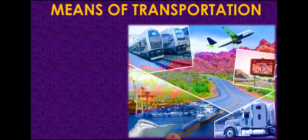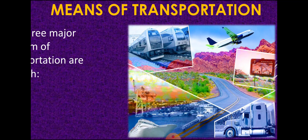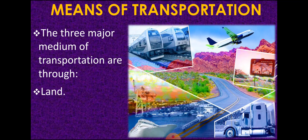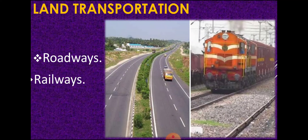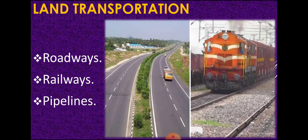First of all, let us talk about means of transportation. As far as means of transportation are concerned, all of us know that the major modes of transportation are through land, water, and air. Land transportation consists of three important things: roadways, railways, and the newest one — pipelines.